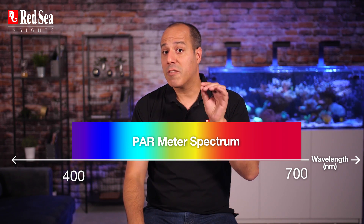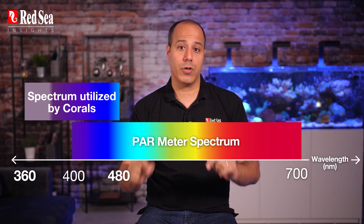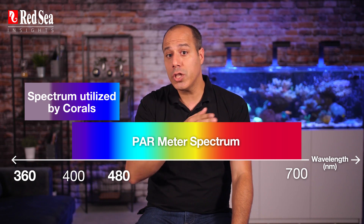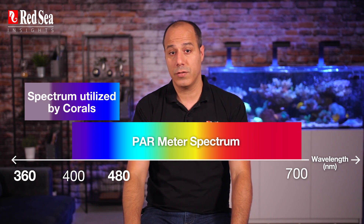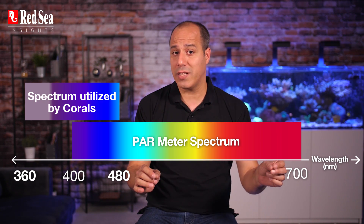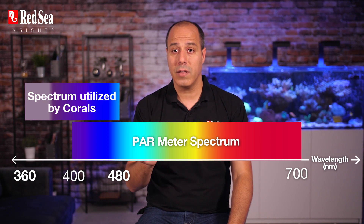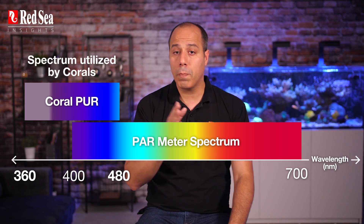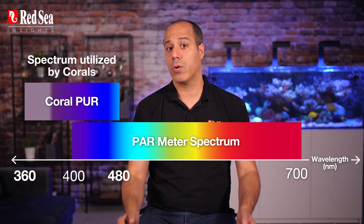But the spectrum that is relevant for corals starts below the range of the visible light in the UV region and continues into the blue part of the visible light range. This section of the spectrum is between 360 to 480 nanometers and is the photosynthetic utilized radiation, or PUR, that is actually used by the corals.